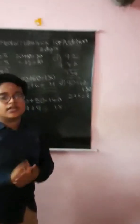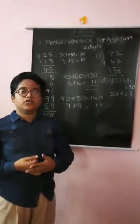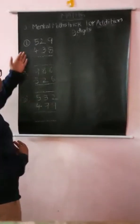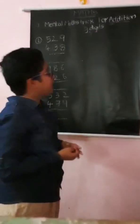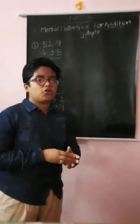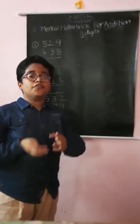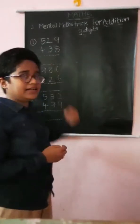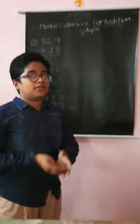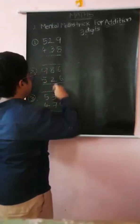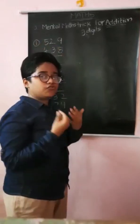So friends, you've learned with 2-digit numbers. Next we will go through 3-digit numbers. For 3-digit numbers, in the previous problem we started from tens to ones. Now here there are 3 digits, so we should start from hundreds, tens, then ones. Here the problem is 529 plus 438.